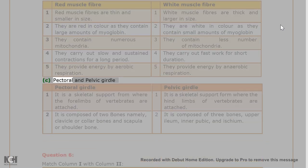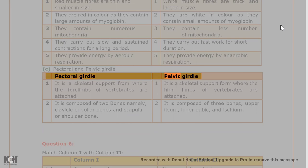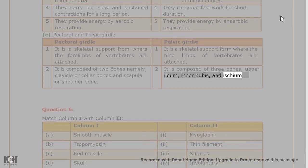C. Pectoral and Pelvic girdle. Pectoral girdle: 1. It is a skeletal support from where the four limbs of vertebrates are attached. 2. It is composed of two bones namely, clavicle or collar bones and scapula or shoulder bone. Pelvic girdle: 1. It is a skeletal support from where the hind limbs of vertebrates are attached. 2. It is composed of three bones, upper ilium, inner pubic, and ischium.